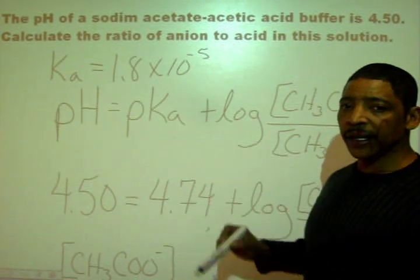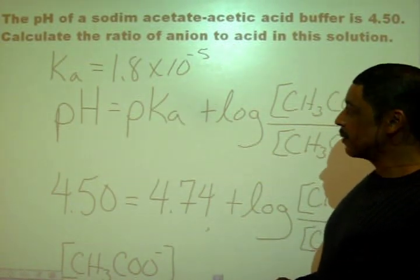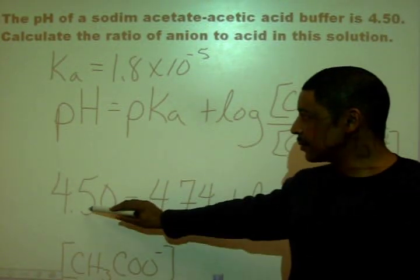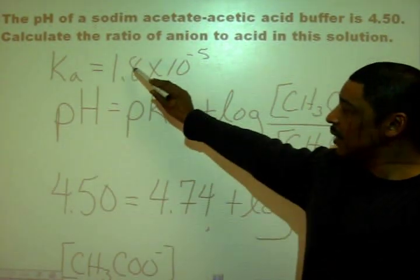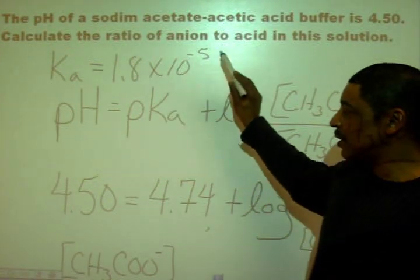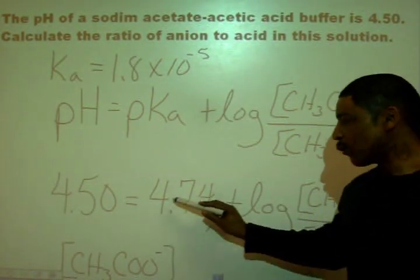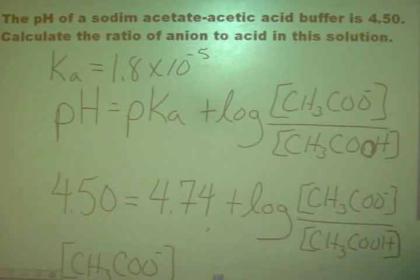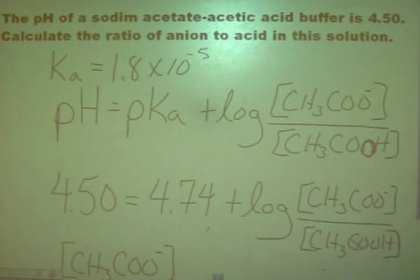Going to our Henderson-Hasselbalch equation, the pH is given at 4.50. The negative log of 1.8 times 10 to the minus 5 is 4.74, and of course, we add that to the log of our anion concentration over our acid concentration.